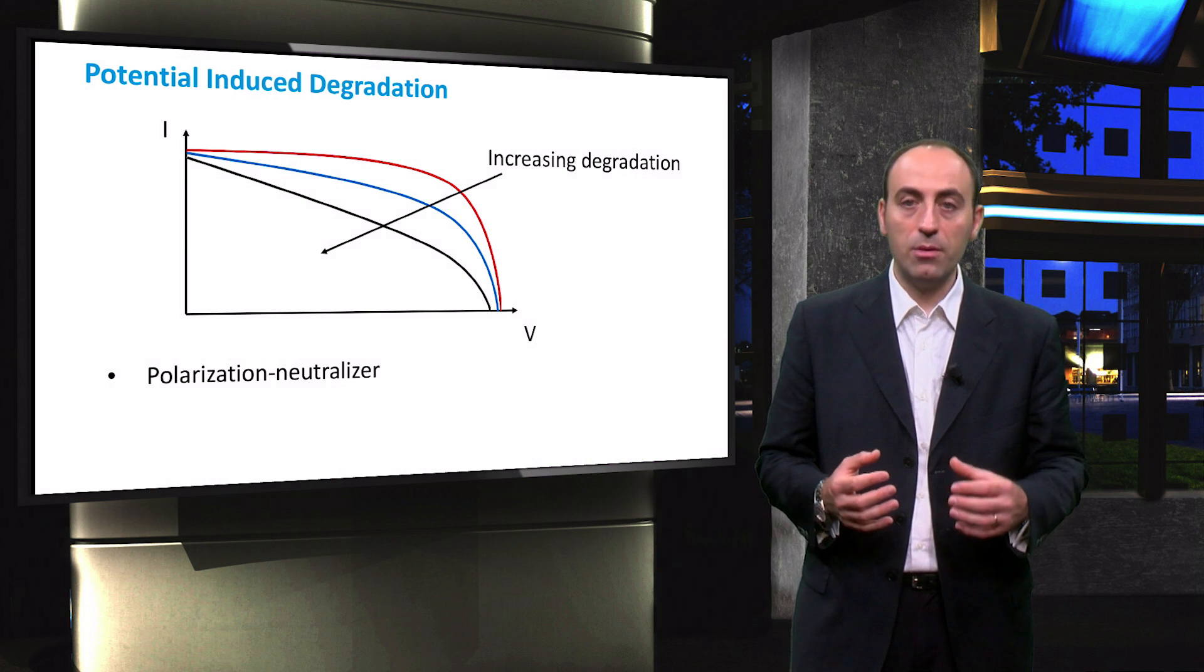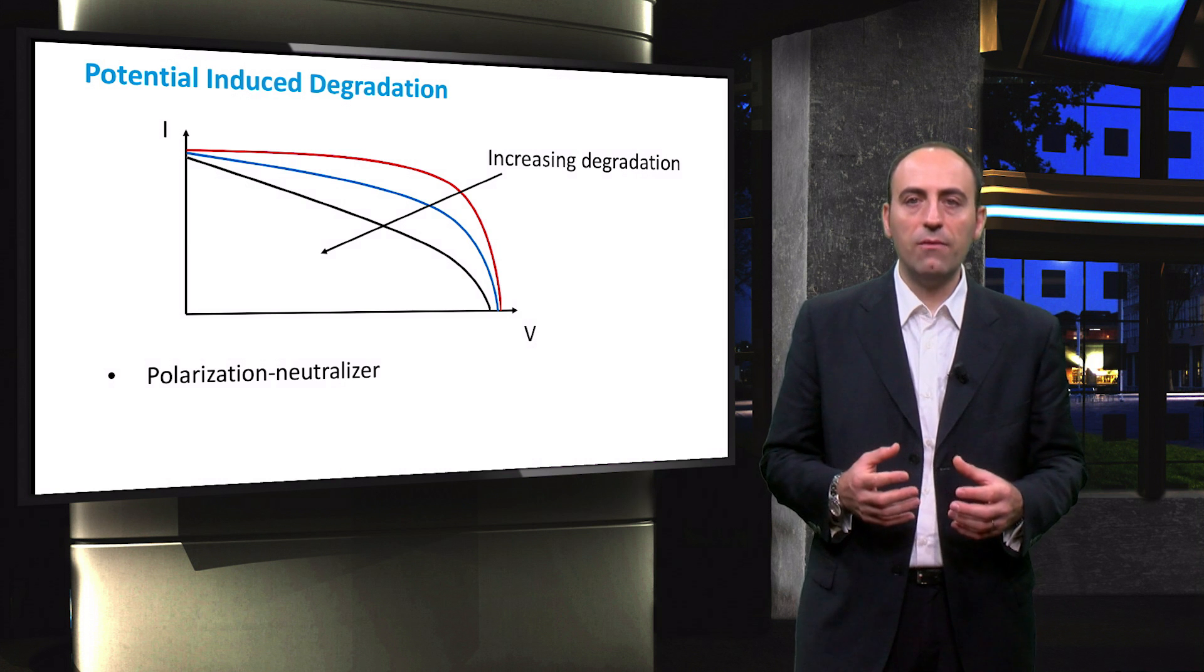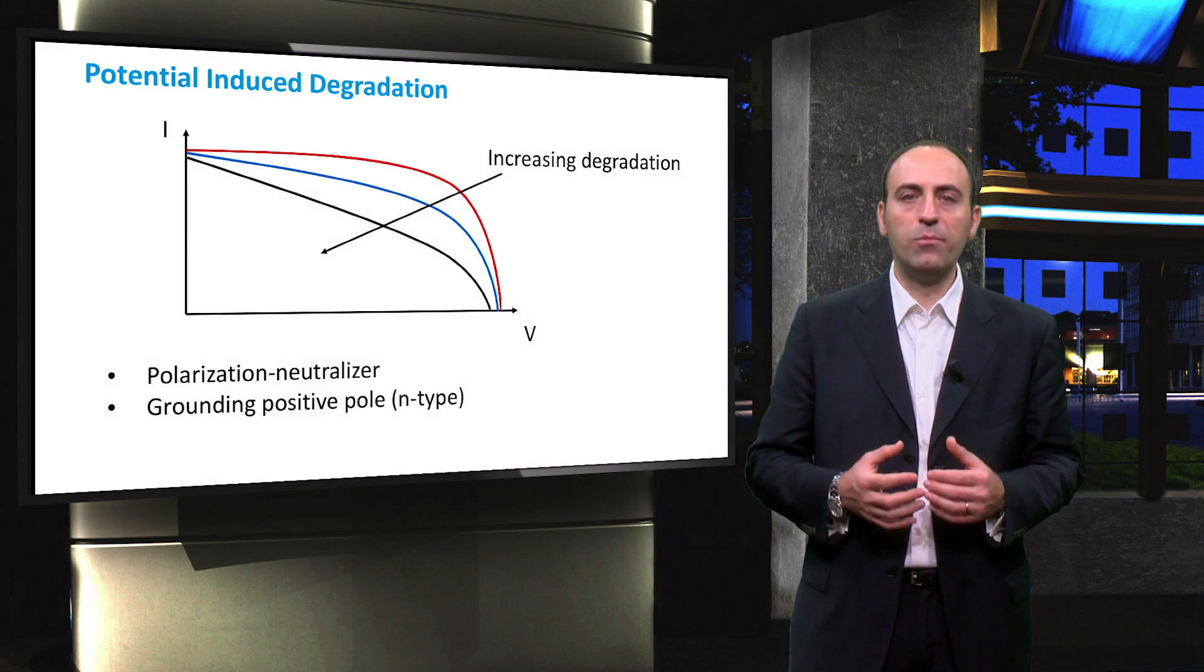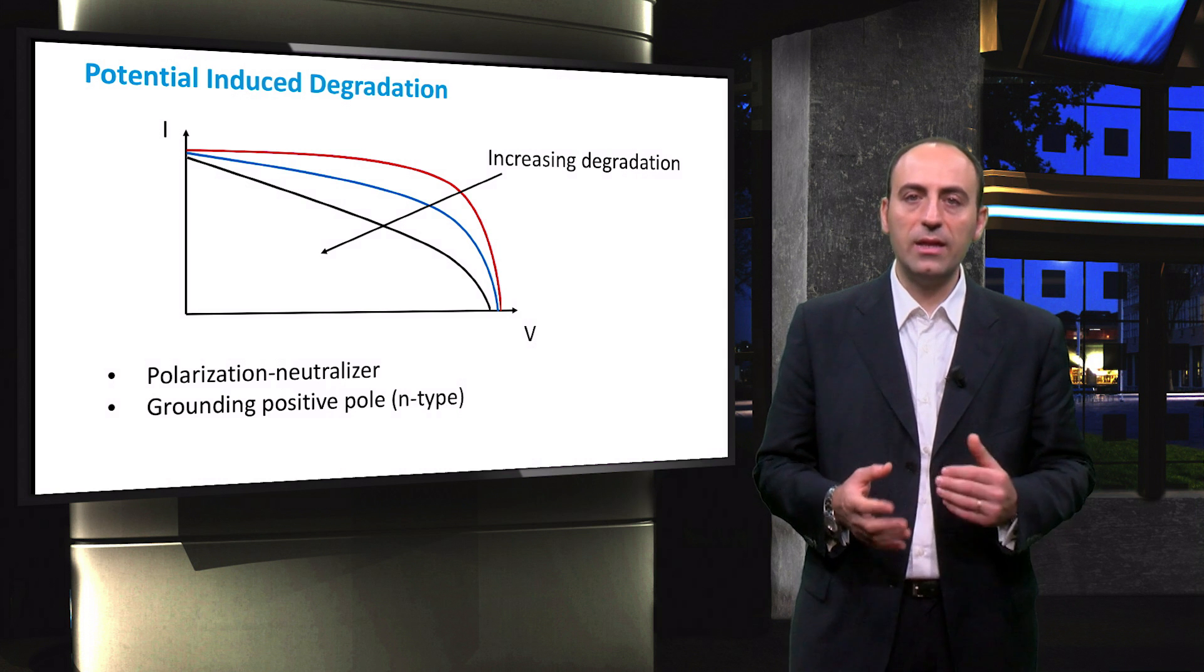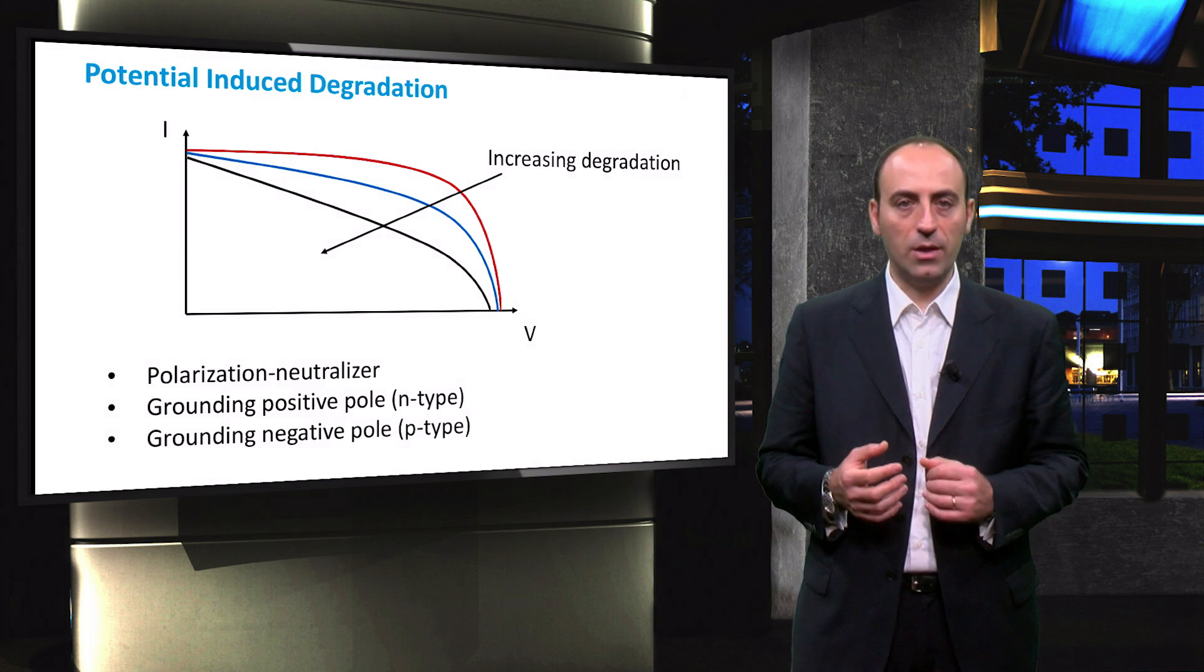If grounding can be performed, we have to differentiate between the two cases. If the wafers of the PV panel are n-type, then the positive pole should be grounded. On the other hand, if the cells are of P-type, the pole to ground is the negative one.